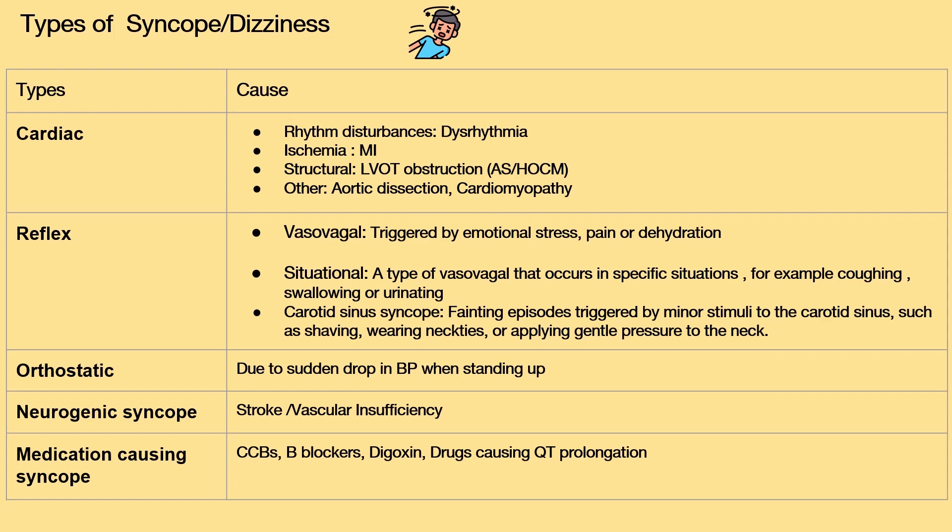Orthostatic syncope is due to a sudden drop in blood pressure when standing up. Neurogenic syncope is due to stroke and vascular insufficiency. Medications causing syncope include calcium channel blockers, beta blockers, digoxin, and drugs causing QT prolongation.